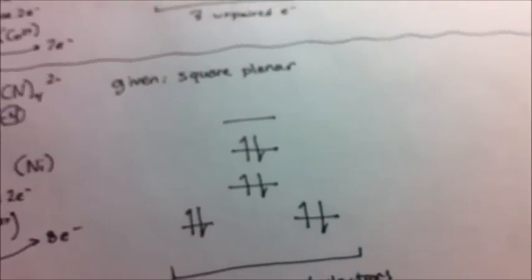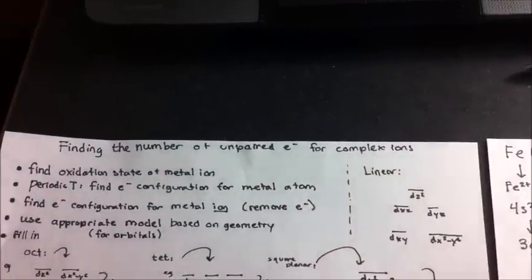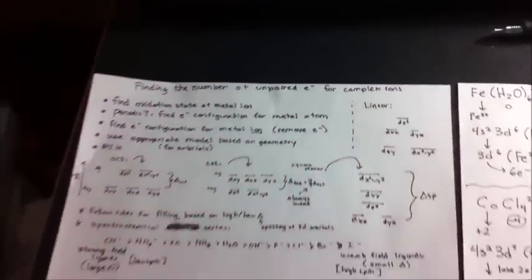This is more or less how you find the number of unpaired electrons for complex ions.